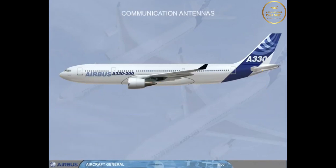Let's briefly familiarize ourselves with the location of the communication antennas: VHF-1, VHF-2, VHF-3, and HF-1 and 2.